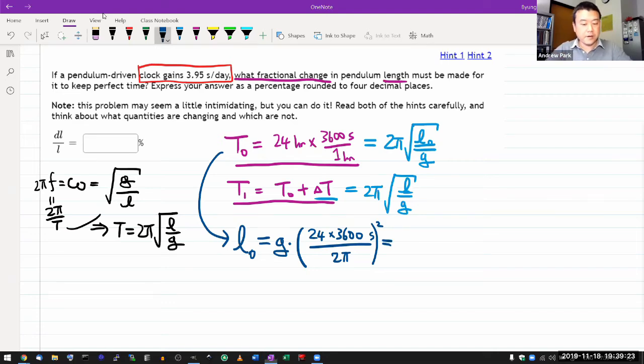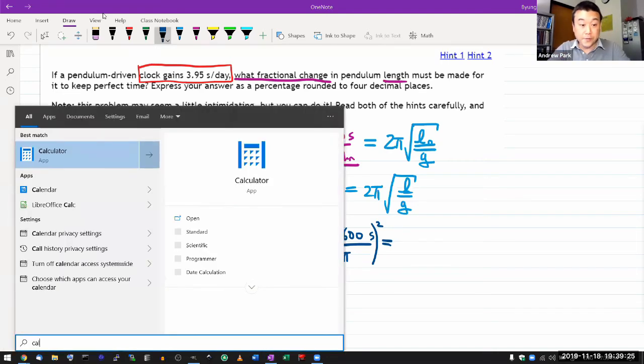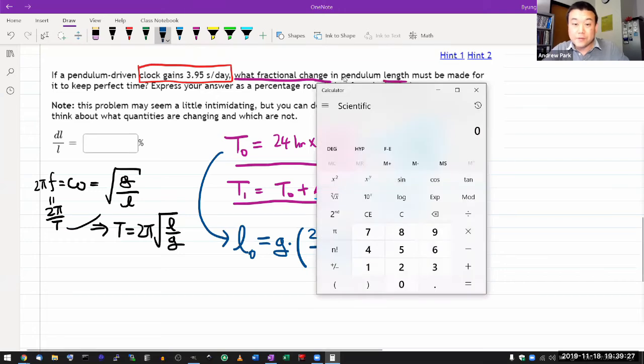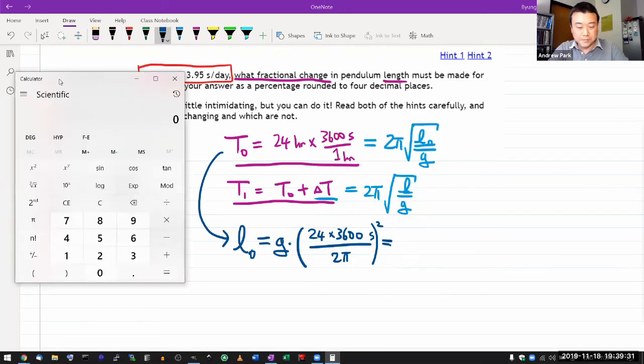Let's plug this into calculator. This is a numerical exercise for me. So if you are using calculus, then you won't have to plug in numbers so sorely. 9.8 times parenthesis 24 times 3600 divided by 2 divided by pi, the whole thing squared. All right.